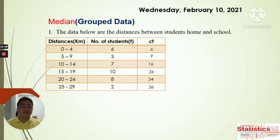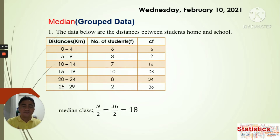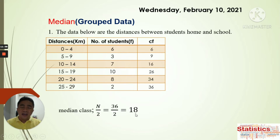Next, we find the median class using n/2. Since n = 36, we compute 36/2 = 18. Looking at the cumulative frequencies, 18 falls within the class whose cumulative frequency is 26, since the previous class only reaches 16. Therefore, the class 15–19 is our median class.